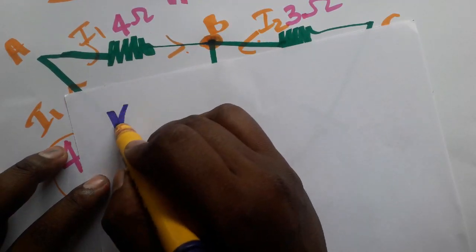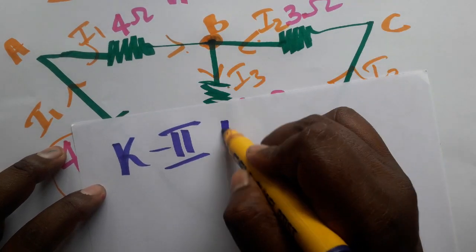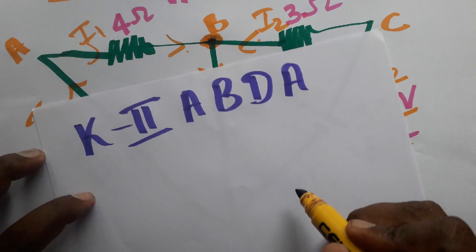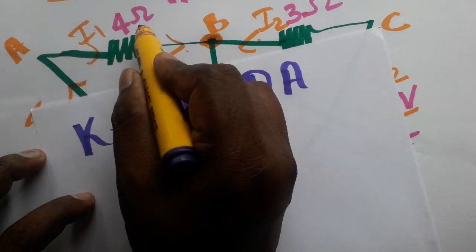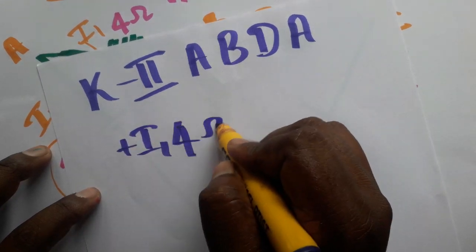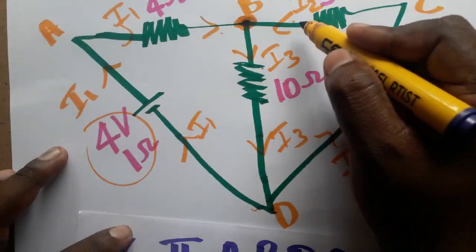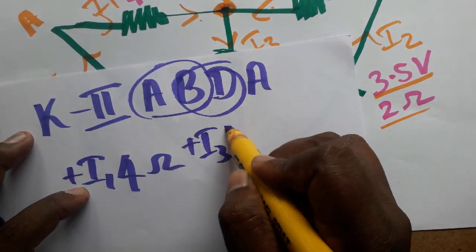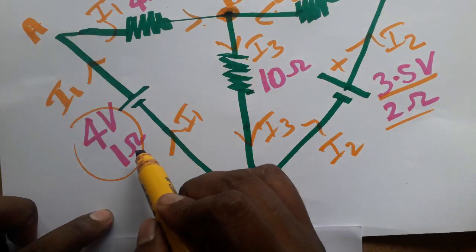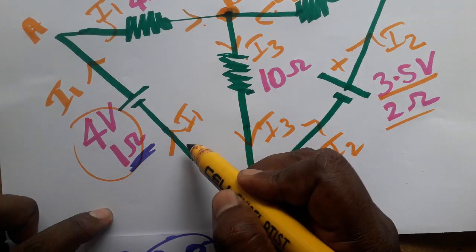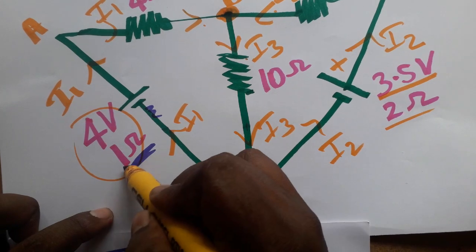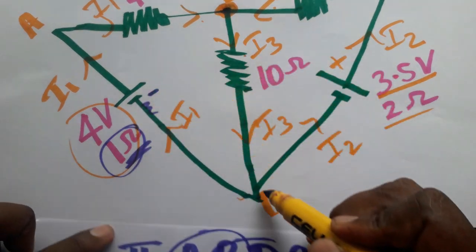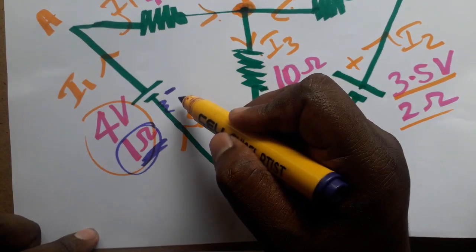I am applying Kirchhoff's second law — the loop law. I take loop A-B-D-A. Going from A to B, the current direction is I1, so it is a positive term: plus I1 times 4 ohms. Then from B to D, it is I3 through 10 ohms — same direction, so plus I3 times 10 ohms. At the internal resistance of 1 ohm, the current is I1, so plus I1 times 1 ohm.